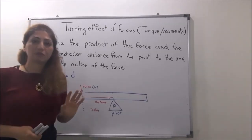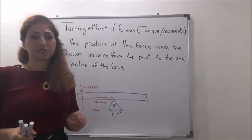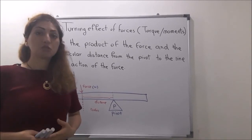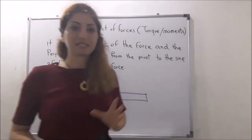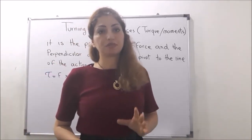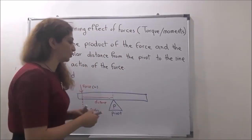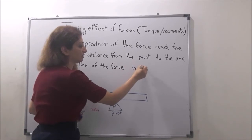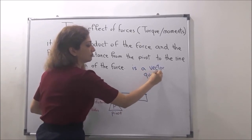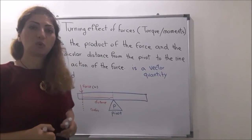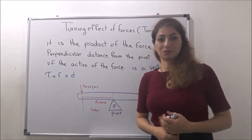The next thing to know is that rotation has two directions: clockwise and counter-clockwise. Because torque has both a direction and a magnitude, we say that torque is a vector quantity. It is very important to know that torque is a vector quantity.